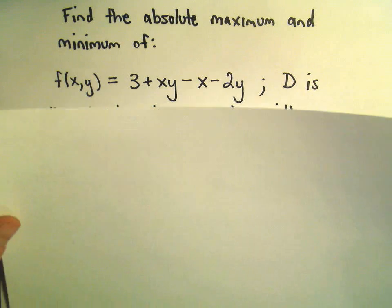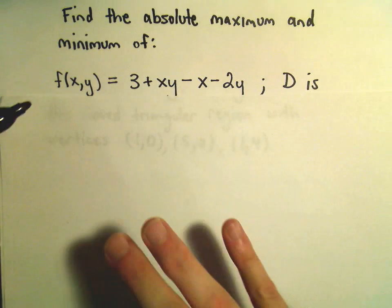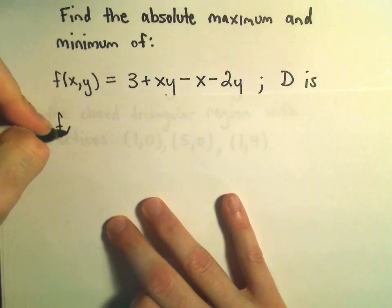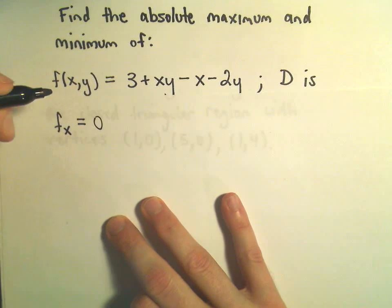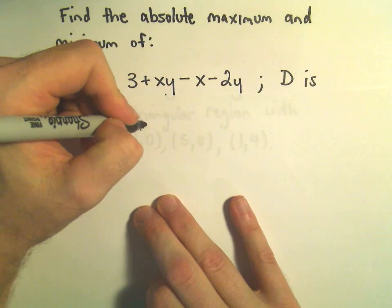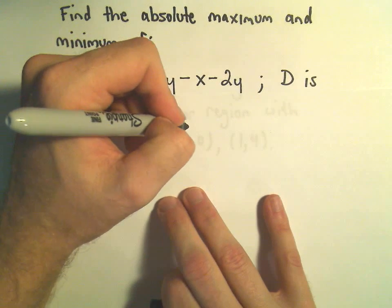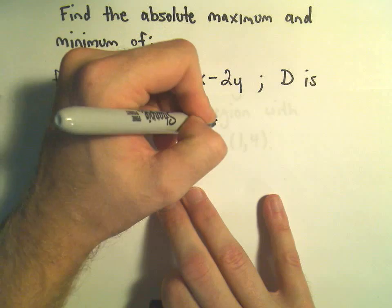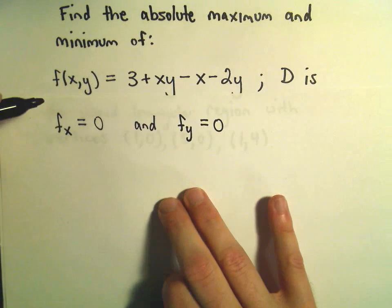A couple things we're gonna have to do. We have to take the partial derivatives. I have to take the partial with respect to x, set it equal to zero, and we'll also have to solve the partial with respect to y and set that equal to zero.